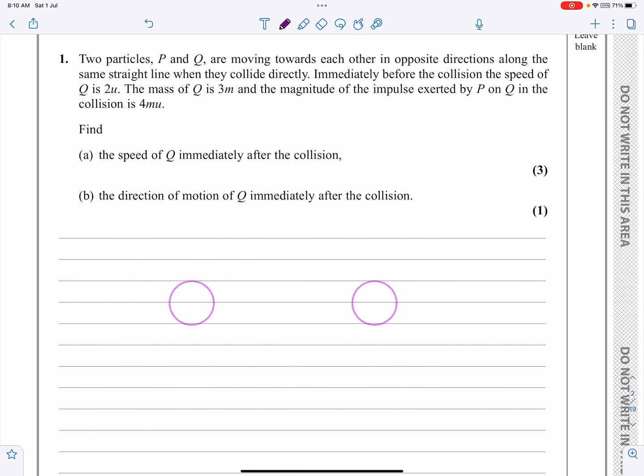We've got two particles, P and Q, that are moving towards each other. So if I say this is the before diagram, I've got P here and I've got Q here. They're moving towards each other. So let's put the arrows on. And what information have they given me?